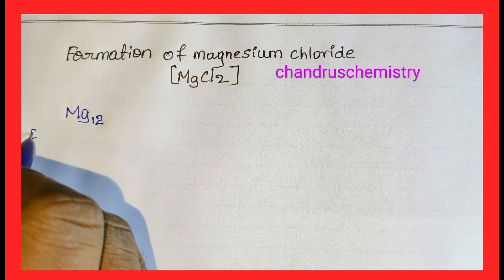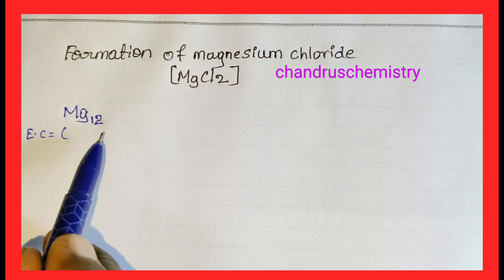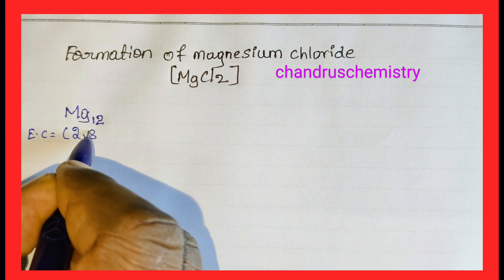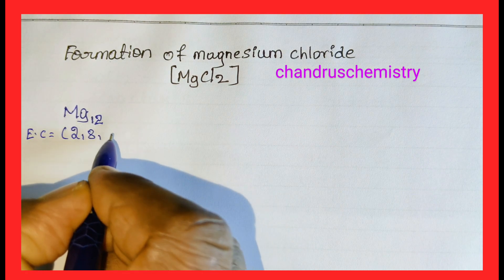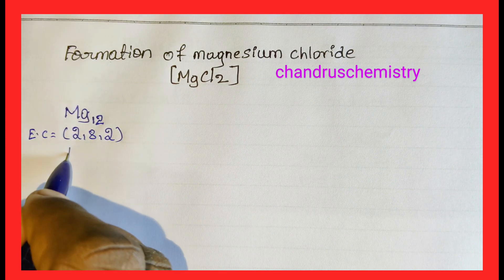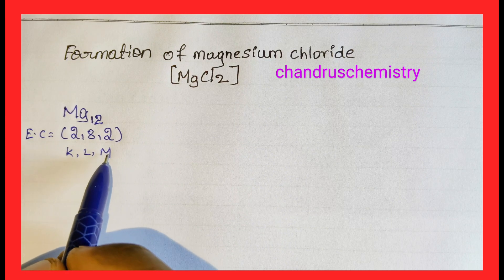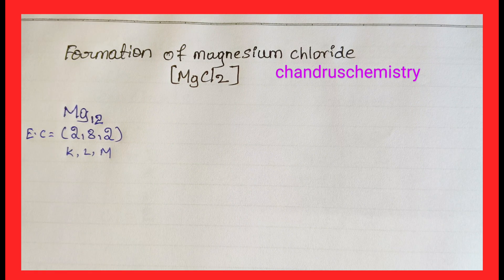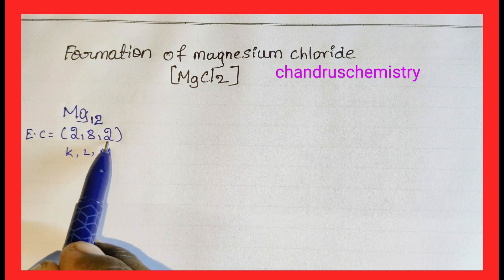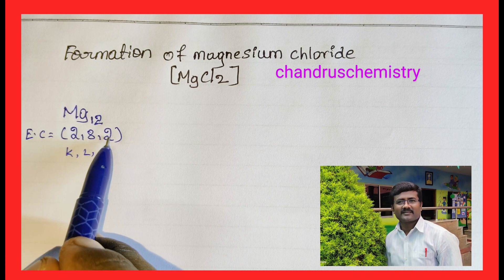Electronic configuration of Magnesium: distribute the electrons to the different shells. First shell has 2 electrons, second shell has 8 electrons, and the third shell has 2 electrons — K shell, L shell, and M shell.